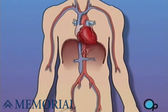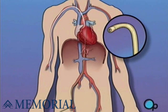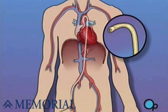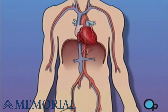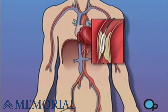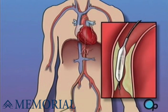During a balloon angioplasty, a heart specialist will insert a thin tube into an artery in your arm or leg and gently guide it towards the problem area in your heart. Once the tube is in place, a small balloon is briefly inflated in order to widen the narrowed artery.